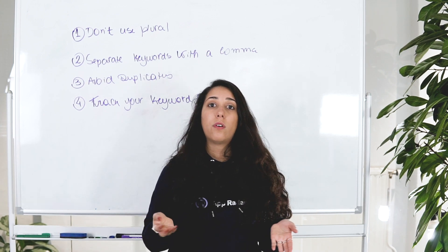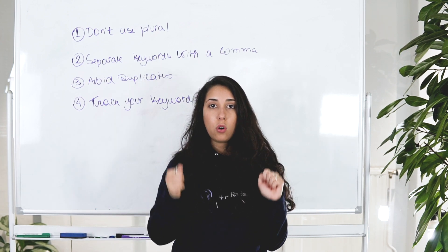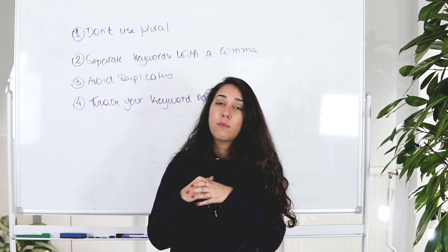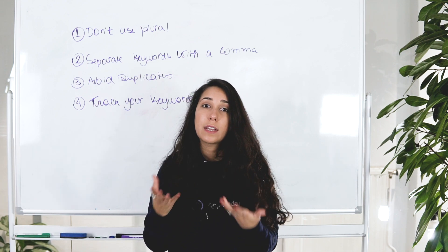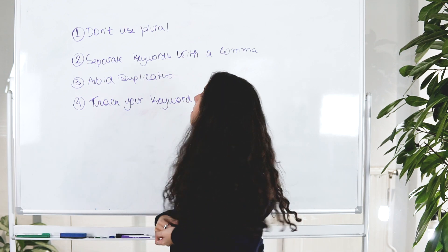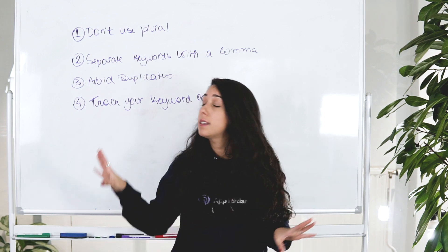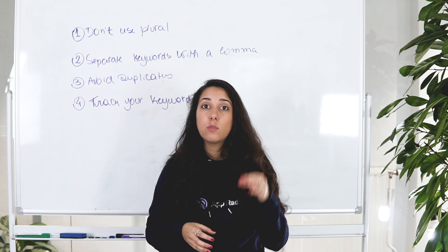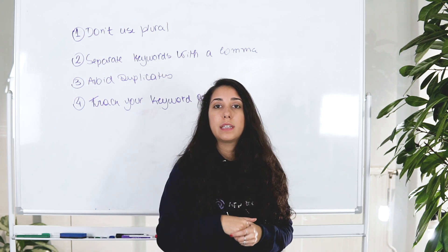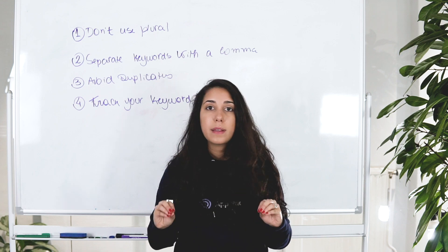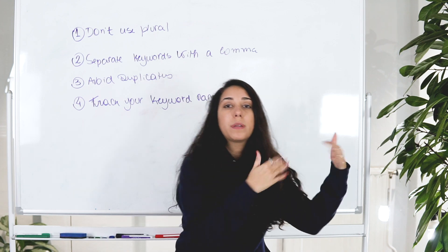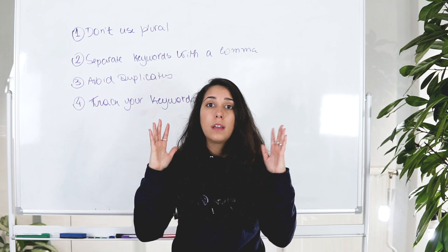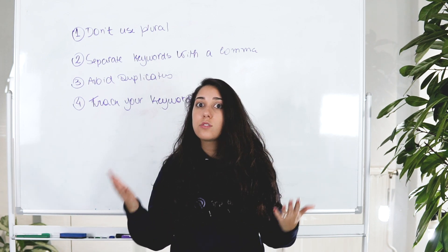Separate keywords with a comma — as discussed, just write keyword,comma,keyword. No space after the comma, just the comma. That saves characters so you can write more keywords. Avoid duplicates — this is one of the biggest things. You only need to write the keyword once in one field; Apple will understand you want to rank for it. Repeating won't improve your ranking, so save the characters and don't add keywords already in other fields.